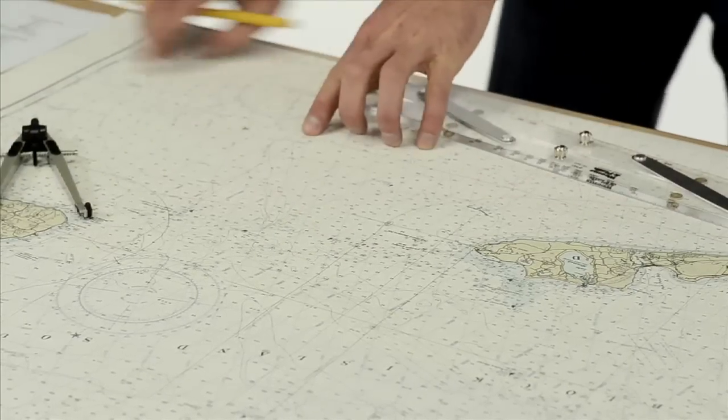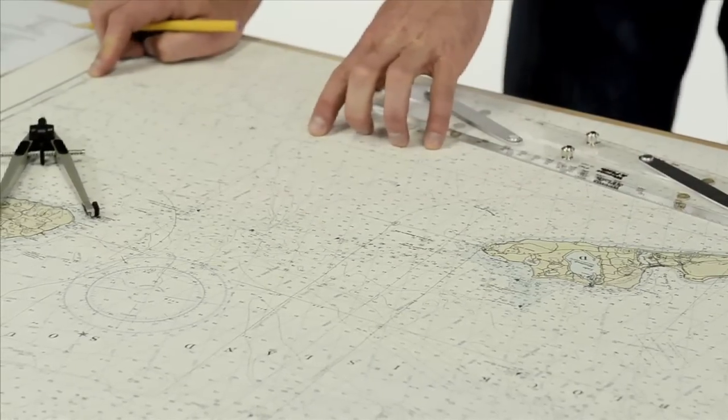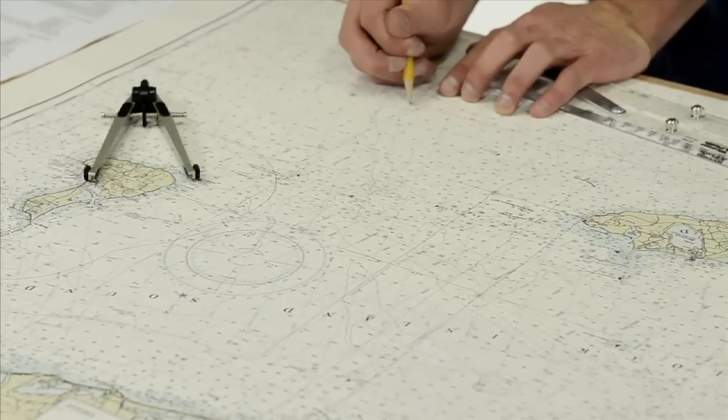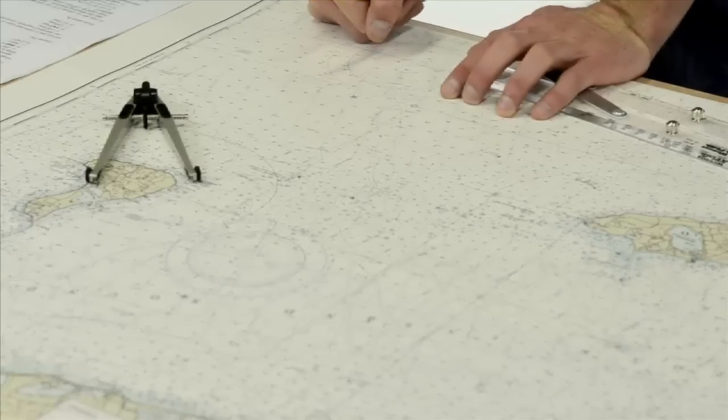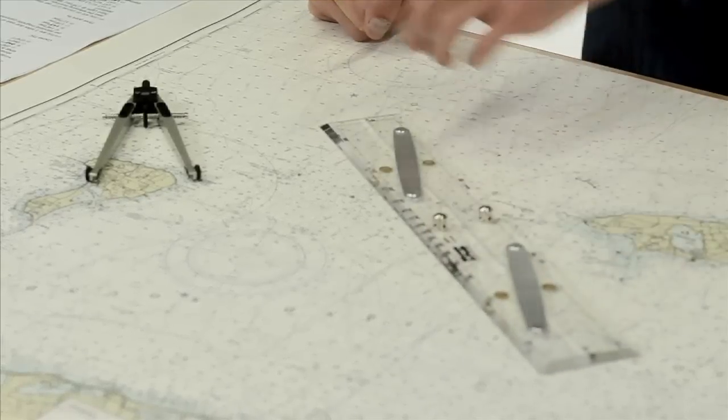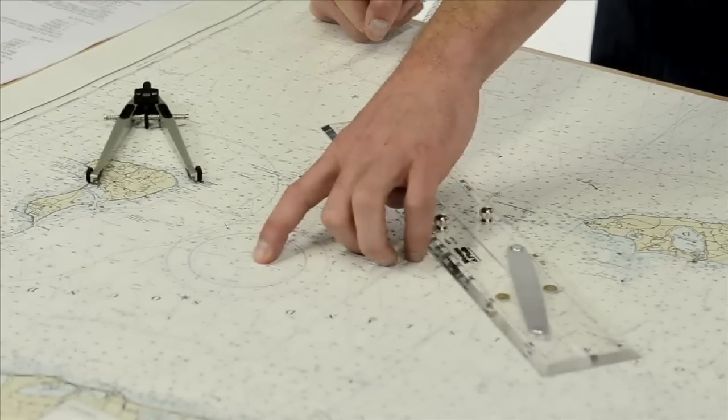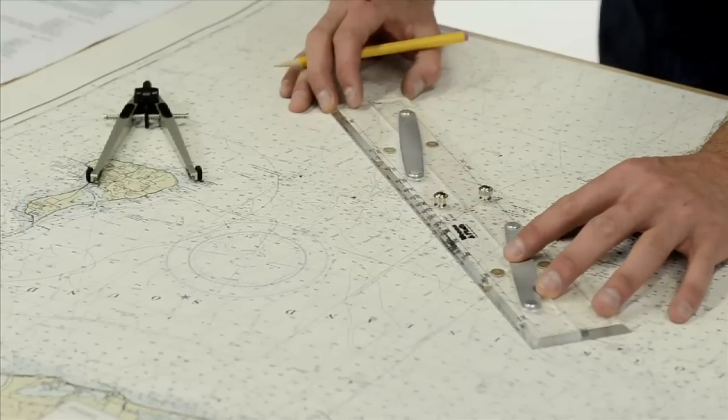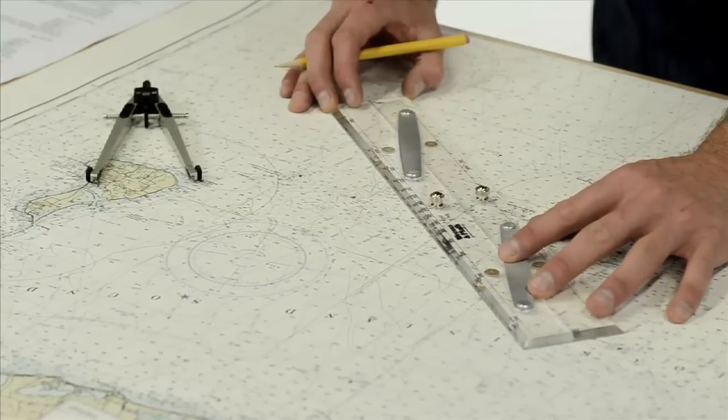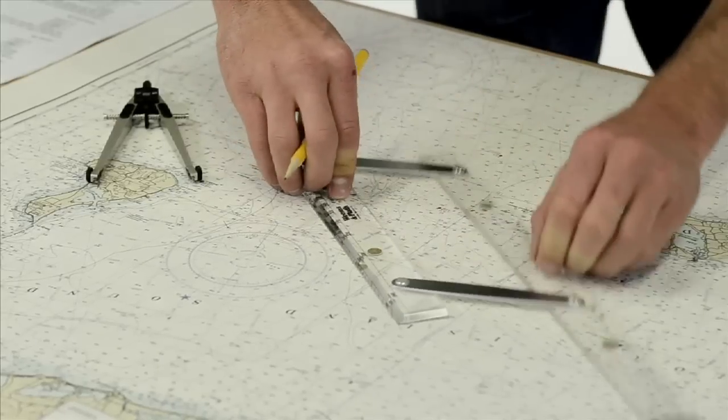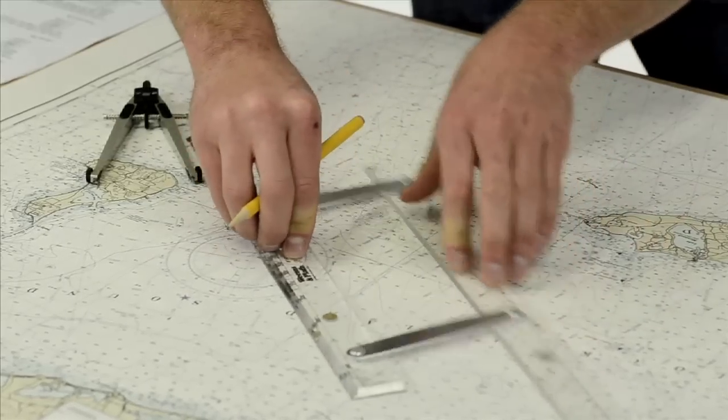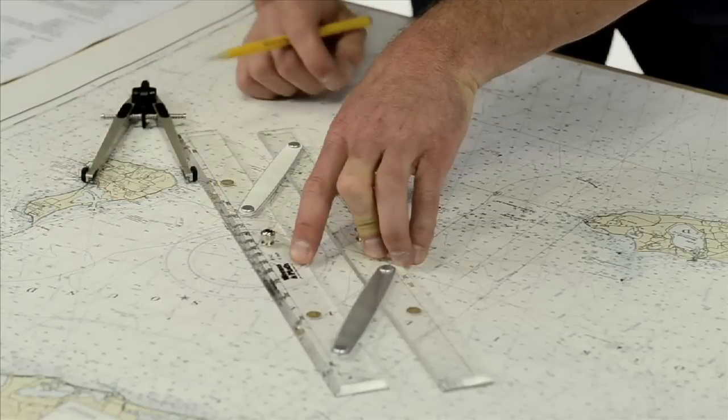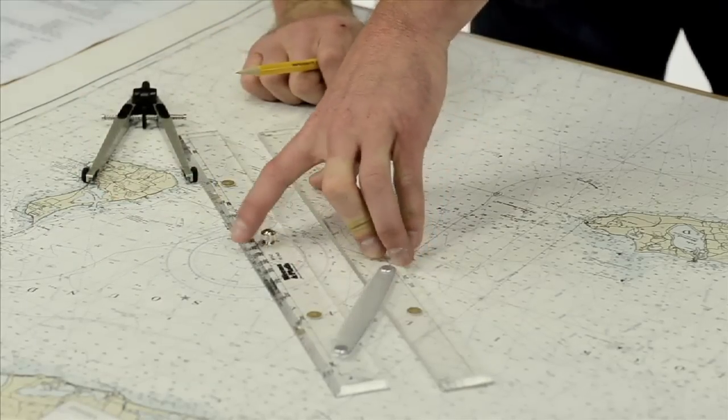Our ending position was at latitude 41 even, longitude 71 40 west. So it puts us right at this intersection. Now we need to take our parallel rules, walk it to a compass rose, read the outer ring, and get the degrees true of our course. We line this up, walk it to the compass rose, and record our course. It looks like 128 degrees true.